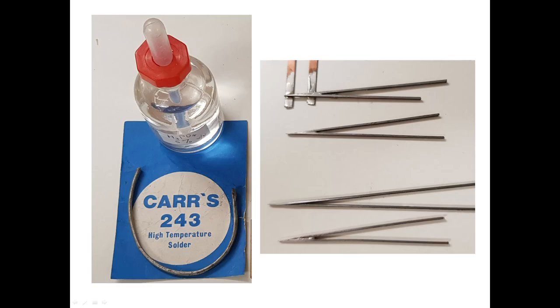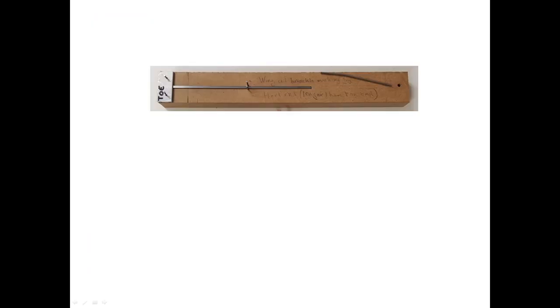I complete the common crossing before attaching it to the sleepers. Others prefer to install the V first and then set up the wing rails. It's simply a matter of choice.